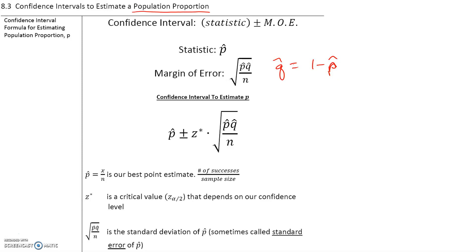The confidence interval to estimate p, where p is the population proportion, is p-hat, where p-hat is the sample proportion, plus or minus z-star, which is a critical value, times the square root of p-hat q-hat over n, which is the standard deviation of the sample.